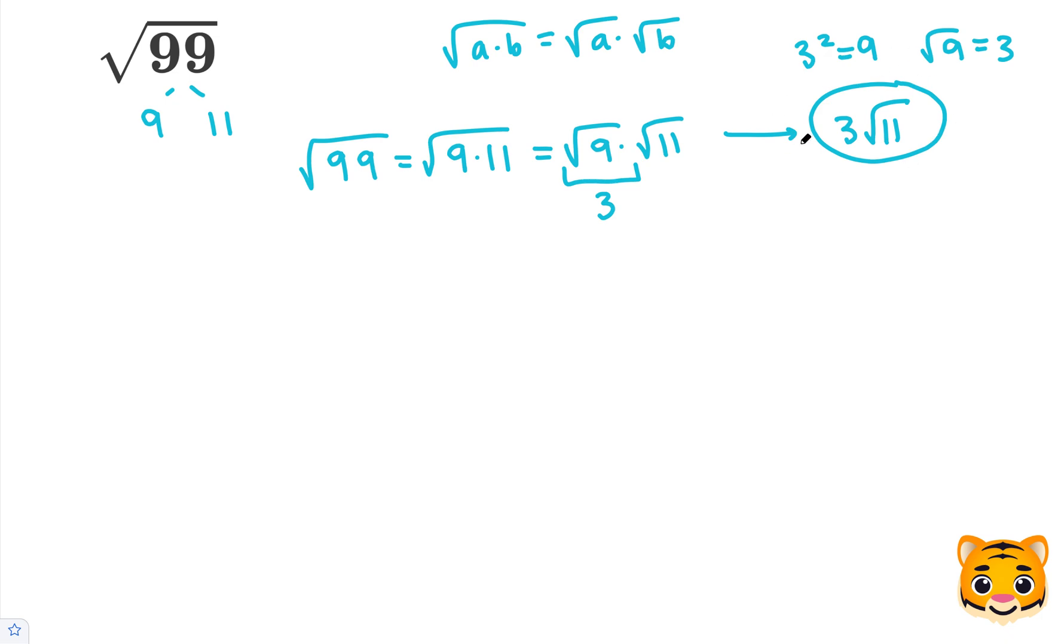Now this is our simplified version, but if we want to estimate the square root of 99 to the nearest tenths place value, we want to look at perfect squares nearby. For example, 9 squared is equal to 81, and 10 squared is equal to 100. So, we can see that 99 falls between 81 and 100.